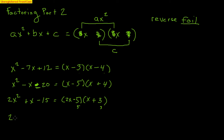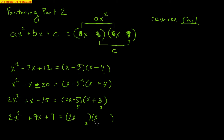Another example: 2x squared plus 9x plus 9. Again I make two binomials. The only way to make 2x squared is with a 2x and an x. For 9, I'm thinking 3 and 3. That gives a 6x on the outside and a 3x on the inside — a 6x and a 3x make the 9x in the middle perfectly. So it's plus 3 and plus 3, everything positive.